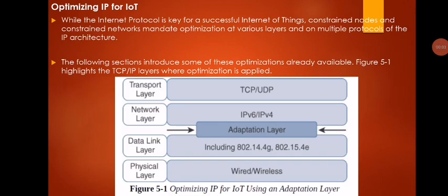Good morning students. We'll move on to the next topic of Module 3: optimizing IP for IoT. In the previous session we discussed the need for optimization and the several reasons that led us to optimize IP at different levels of the IoT architecture. We had problems regarding devices and the network — constrained devices, constrained networks, IP-supported and non-IP-supported devices.